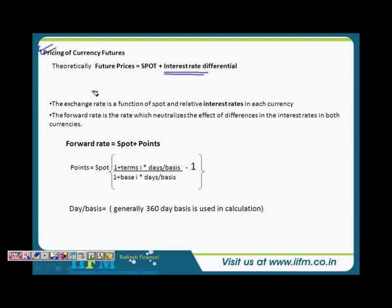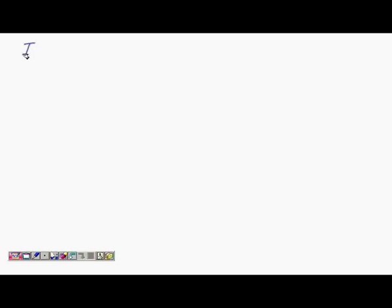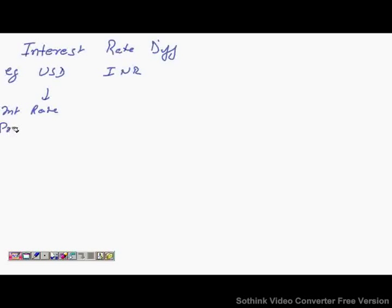The interest rate differential concept says that when there are two different currencies, these currencies are governed by the interest rate of their respective countries. So let's just write it down: interest rate differential. Let's take examples of USD and INR. For example, there is an interest rate prevalent in US dollar, say somewhere around 3%, and let's say INR is 6%, which is almost double.